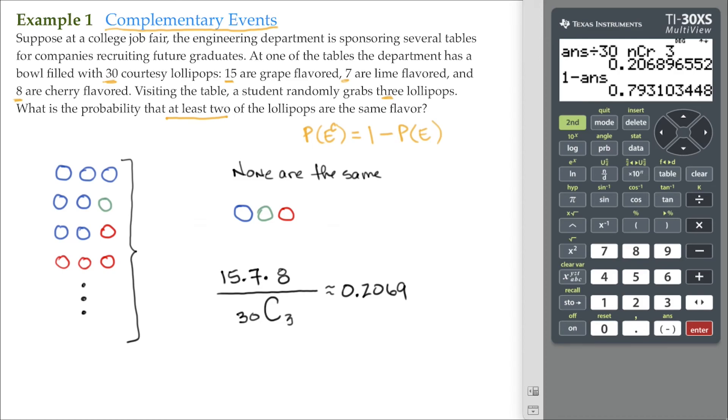So the probability of getting at least two of the lollipops with the same flavor, that's 79.31%.